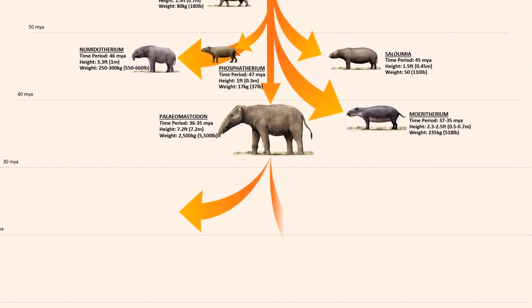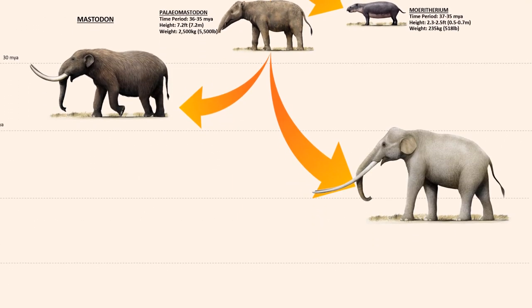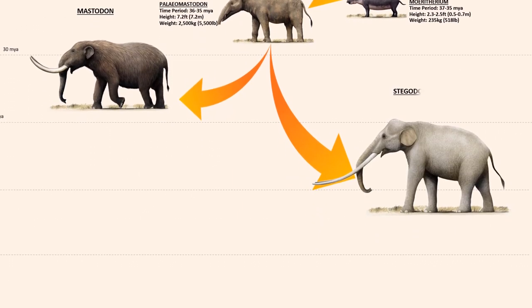From the Paleomastodon, there were three branches that spread out. The first gave rise to the species of Mastodons, and another gave rise to Stegodons. Both of these species, though related to elephants, are not exactly ancestors to them. The Stegodons and Mastodons developed on different parallel lines and went extinct around the middle to late Pleistocene era.